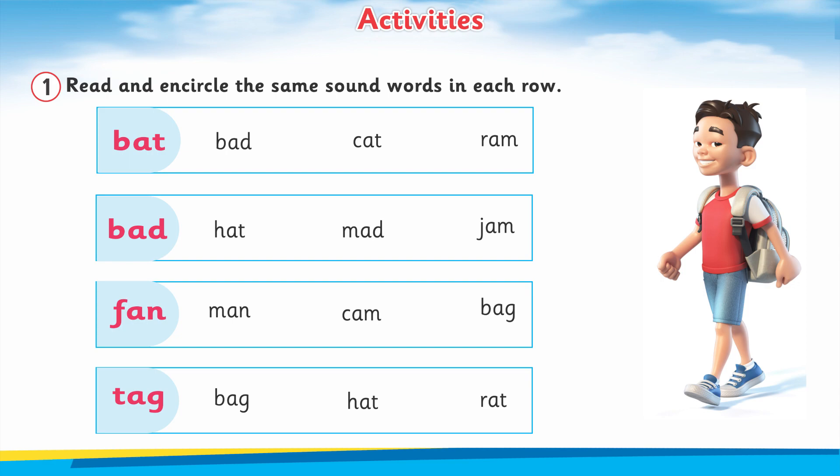Here is a boy and he is Ali. He is very much happy — you can see in this picture that Ali is very much happy because he knows about his lesson. When his teacher said that today our topic is to encircle the same sound words, Ali was excited.